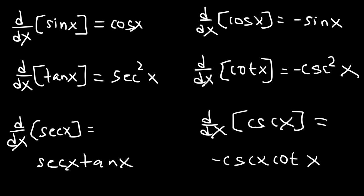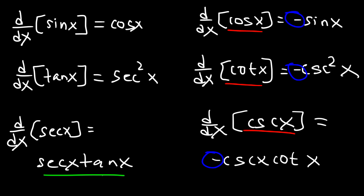Notice that the derivative for every co-function — particularly those that start with a 'c' — they all have a negative sign. Notice the similarity between tan and cotan: the derivative of tangent is secant squared, the derivative of cotan is negative cosecant squared. Secant and cosecant are similar too: the derivative of secant is secant tan, and the derivative of cosecant is negative cosecant cotangent. If you know the left side, you can easily figure out what's on the right side of this screen.